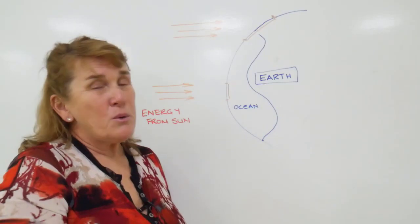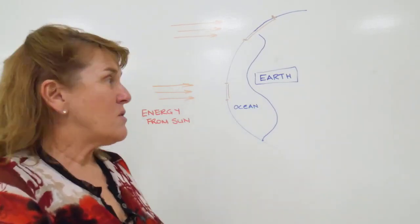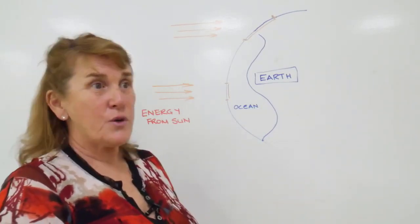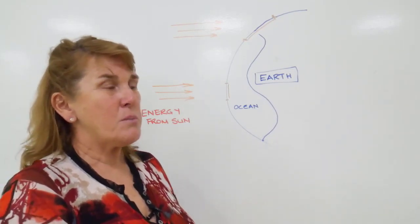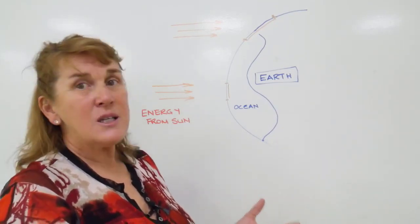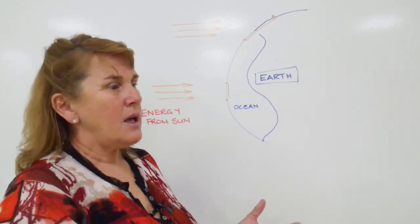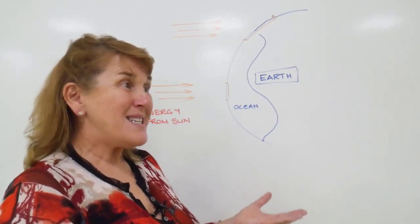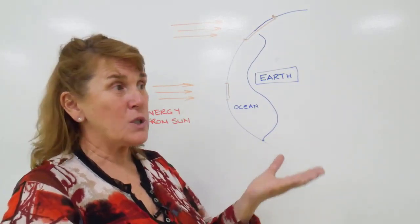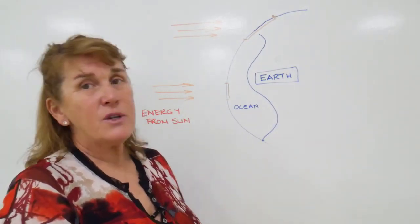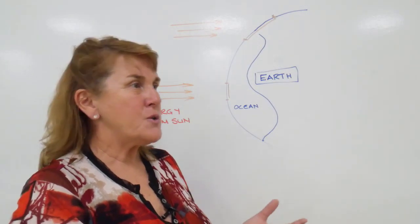The third way, which probably warrants a whole presentation on its own, is the process called photosynthesis. This is where plants, a component of the biosphere, can harness light energy from the Sun and convert it. They basically take CO2 from the atmosphere plus water and in the presence of light energy generate glucose.